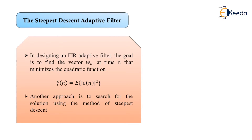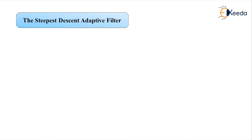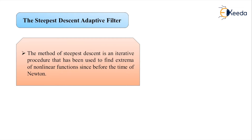The method of steepest descent is basically an iterative type of methodology or procedure. The basic idea is: let w_n be an estimate of the vector that minimizes the mean square error ζ(n) at time n. At time n+1, a new estimate is formed by adding a correction to w_n that is designed to bring w_n closer to the desired solution. This correction involves taking a step size — represented by μ — in the direction of the maximum descent down the quadratic error surface.